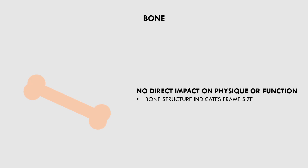If a trainee has a large pelvis and hip joints, they probably have more potential to grow bigger glutes and thighs. Or if a trainee has a large ankle joint, they probably have more room to grow bigger calves. The other implication bone has is for health and function. A higher bone density seems to improve overall function, especially in the elderly. A low bone density generally limits overall movement competency and increases the risk of fractures, which can be fatal in the elderly.